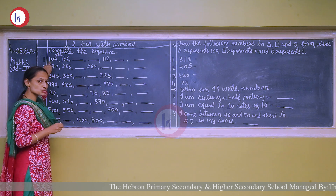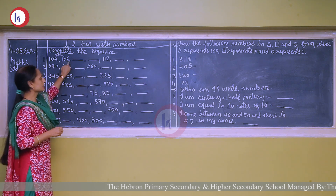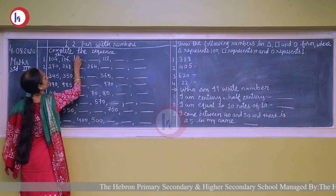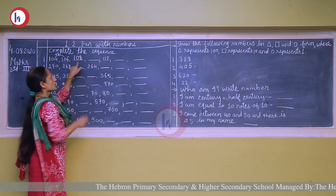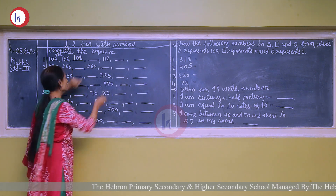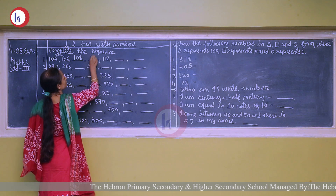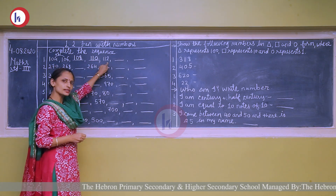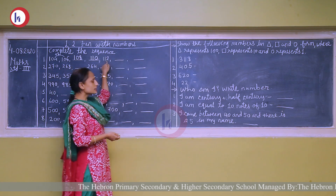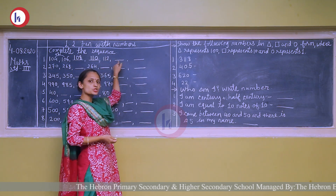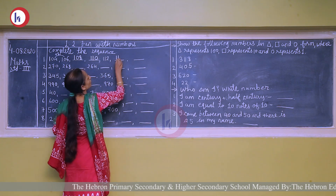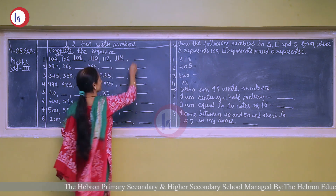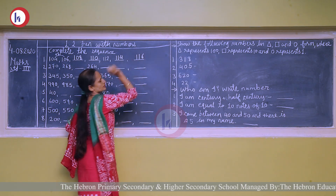104 plus 2 is 106. 106 plus 2 is 108. 108 plus 2 is 110. 110 plus 2 is 112. 112 plus 2 is 114. 114 plus 2 is 116.